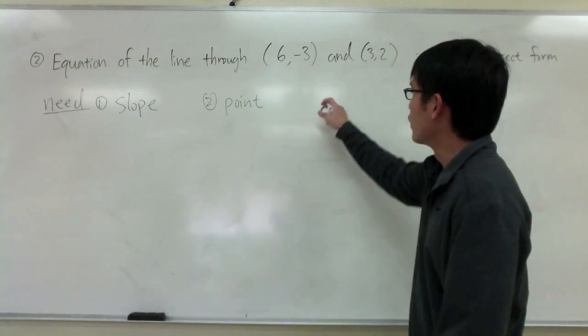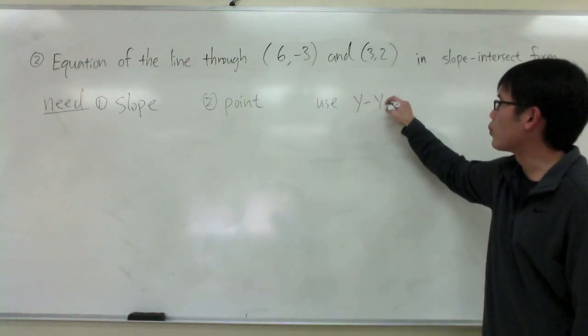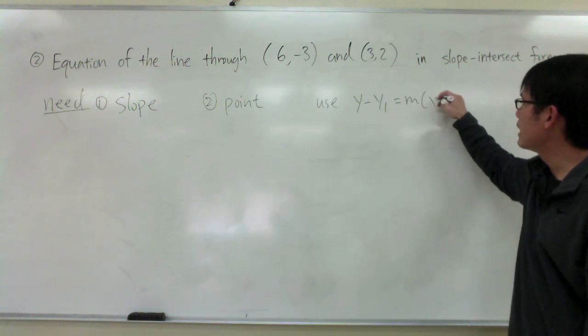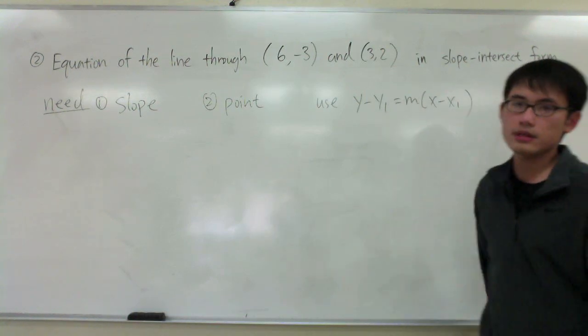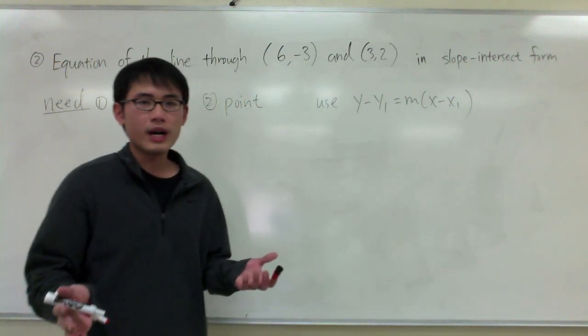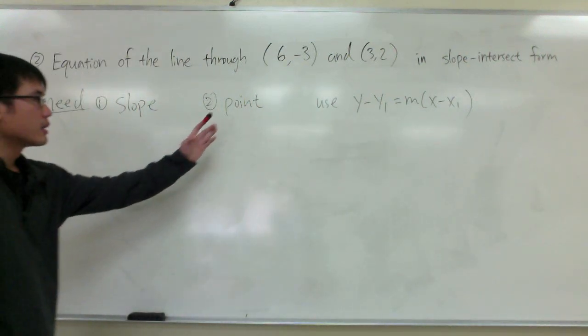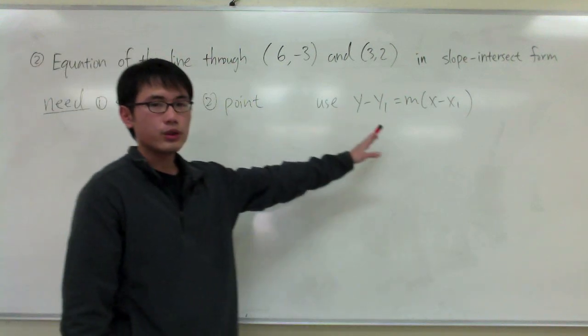Once we have these two things, we can then use the formula y minus y1 is equal to m times x minus x1. So this should be your template whenever you are trying to write an equation of a line. We need to have the slope, the point, and then plug it into the formula.